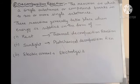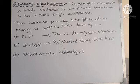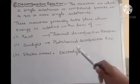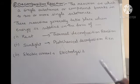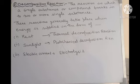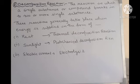Decomposition reactions can proceed in different ways. If we supply energy in the form of heat, the reaction is known as thermal decomposition reaction. If we use sunlight, the reaction is known as photochemical or photolytic decomposition reaction. And if we use electric current, the reaction is known as electrolysis or electrolytic decomposition reaction. Our next work is to discuss examples of decomposition reactions using these different modes: heat, sunlight, and electric current.